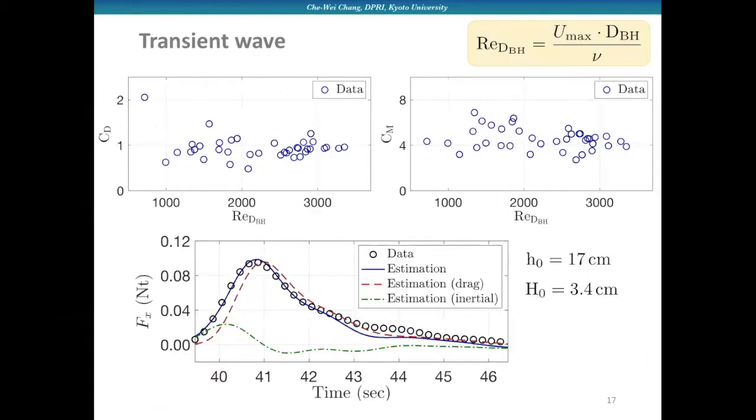In addition to regular waves, we also tested transient waves by generating solitary waves in our experimental tests. Using a similar approach, the parameterization of the coefficients CD and CM can be found, which shows relatively constant values within the range of Reynolds numbers. Here I showed an example of the comparison between estimated forces and measured data. From our experimental tests, we confirmed that the inertia forces are relatively small when comparing with drag force.